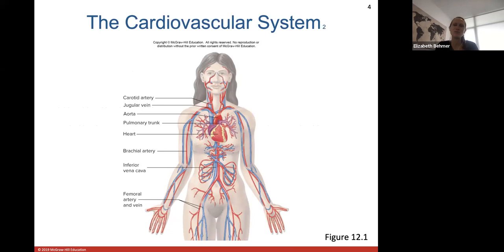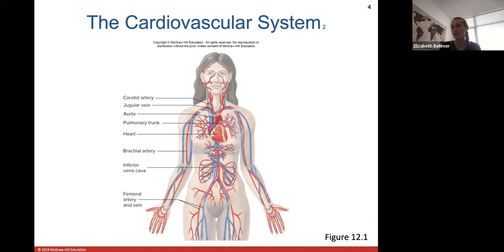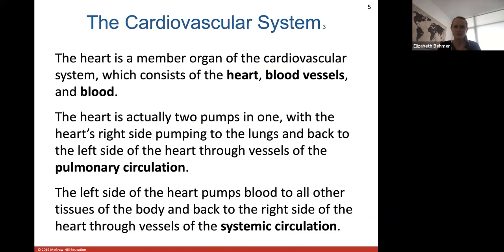Here's your cardiovascular system with the heart right in the center as the big muscular pump, surrounded by a highway system of blood vessels that carry blood to all parts of the body. Red refers to arteries, which most of the time carry oxygenated blood away from the heart. Veins drain deoxygenated blood from all parts of the body back to the heart. That's how blood gets circulated through the body.